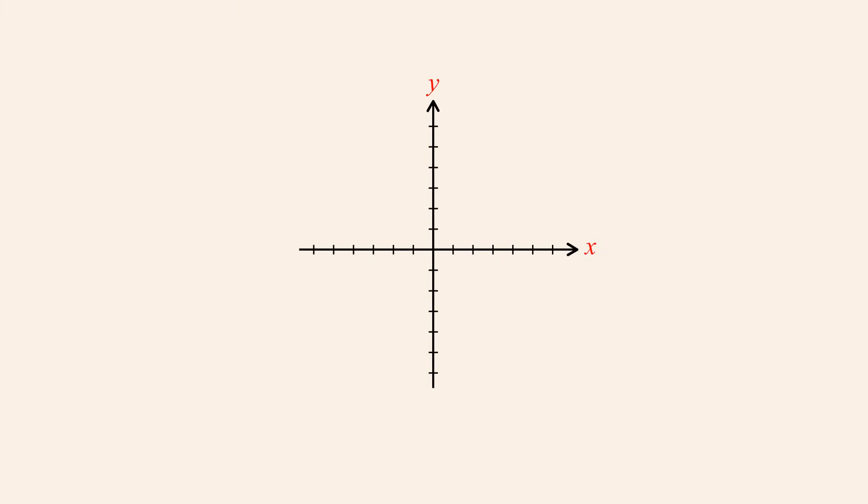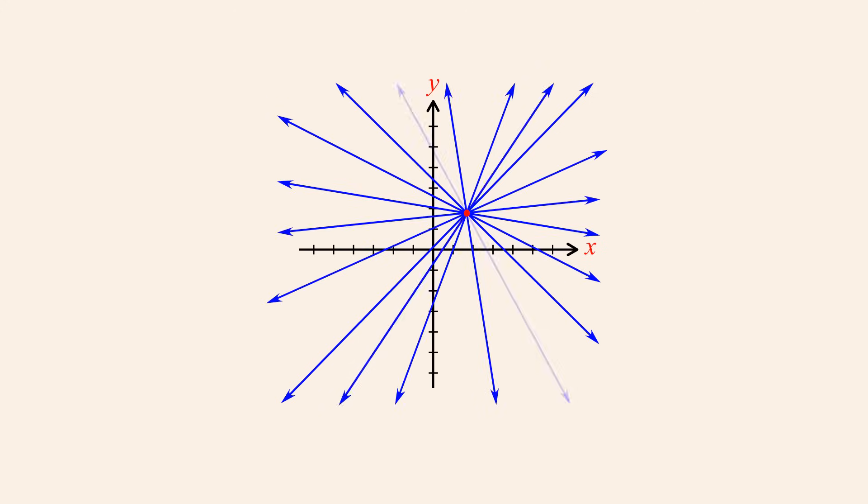Likewise, we cannot uniquely describe a line by specifying a point that lies on the line without specifying the slope, since there are an infinite number of lines with different slopes which include any given point.